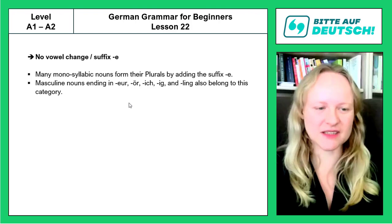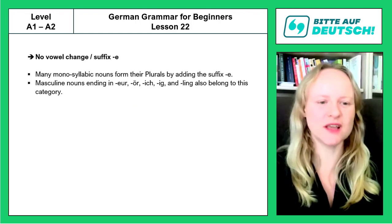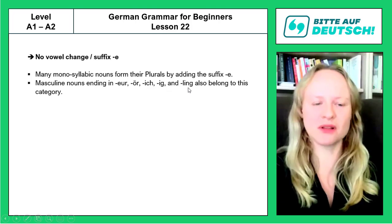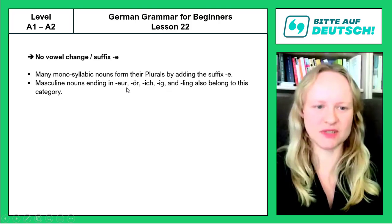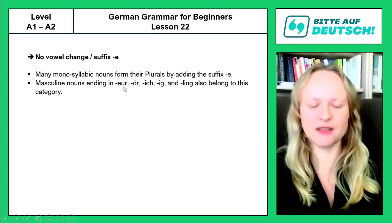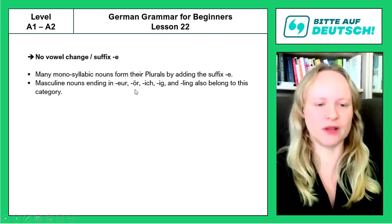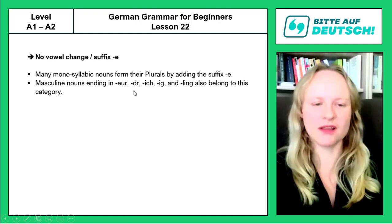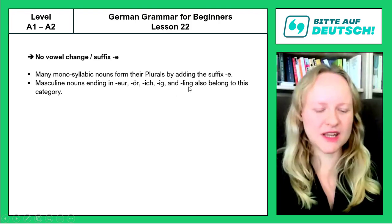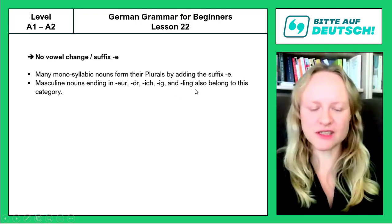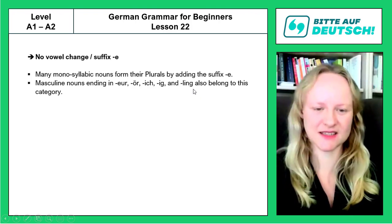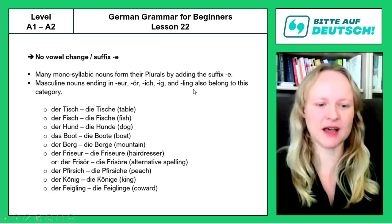On top of that, there are also a couple of masculine nouns that take one of those five typical endings: -eur, which can either be spelled in the typical French way E-U-R or the German way -ör, but the pronunciation of these two endings is the same; -ich; and -ling, which actually does not occur too often, but there are a couple of vocabulary items in the German language that apply these endings.